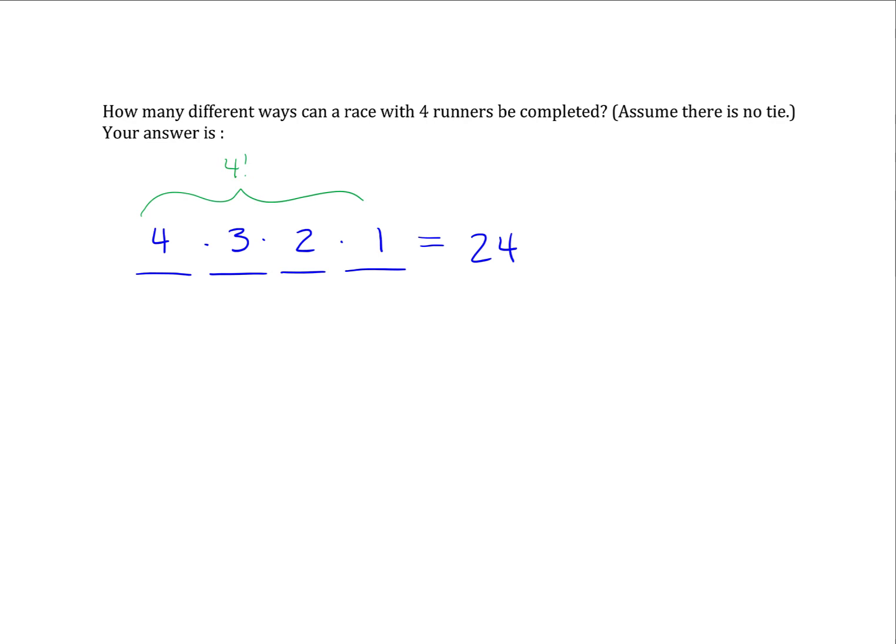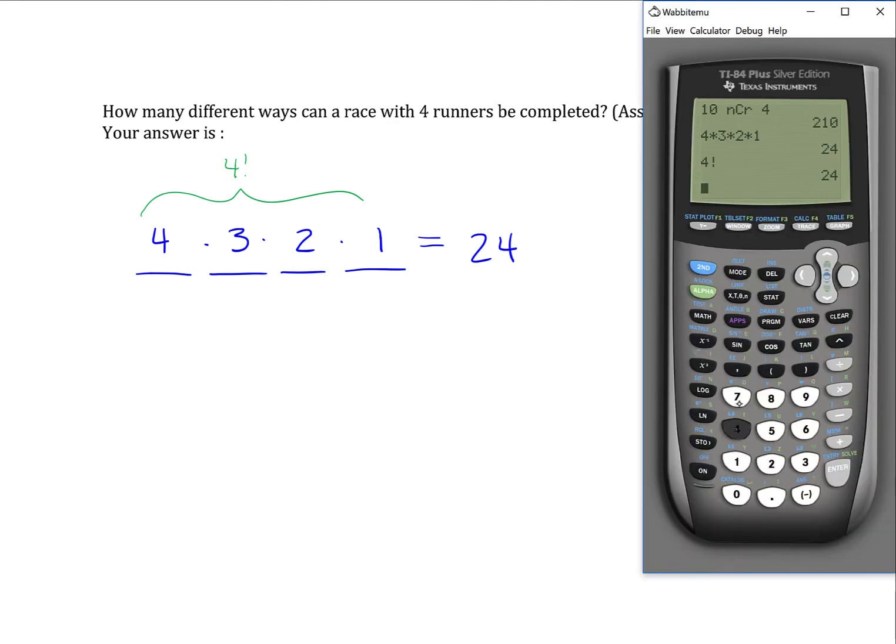And so you would do a permutation of four items taken four at a time. And likewise, you would end up with 24 because the way a permutation works, if you're picking all of your items, then it's just equal to a factorial.